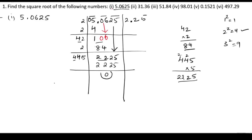If we subtract, we get 0. Therefore, the square root of 5.0625 is 2.25.